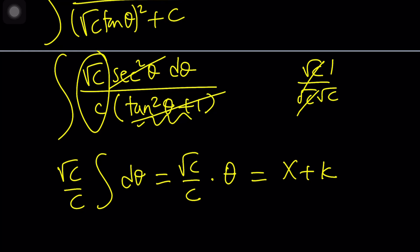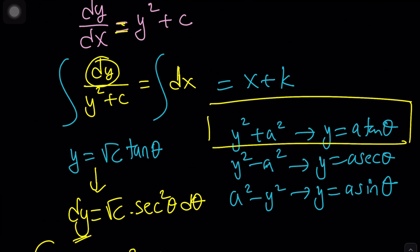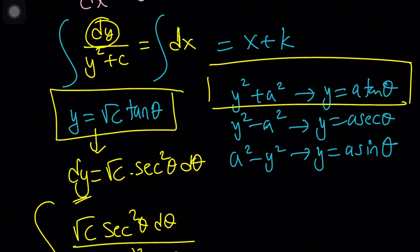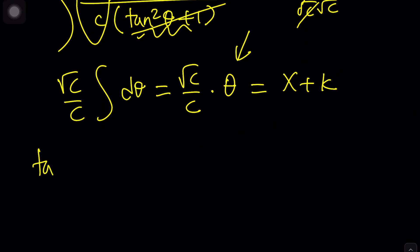Now, we got to back-substitute theta. What is theta? I don't know what theta is. But I do know that tangent theta is y over root c. Let's go ahead and write it down. Tangent theta is y over root c. From here, we can safely say that theta is arctangent of y over square root of c.